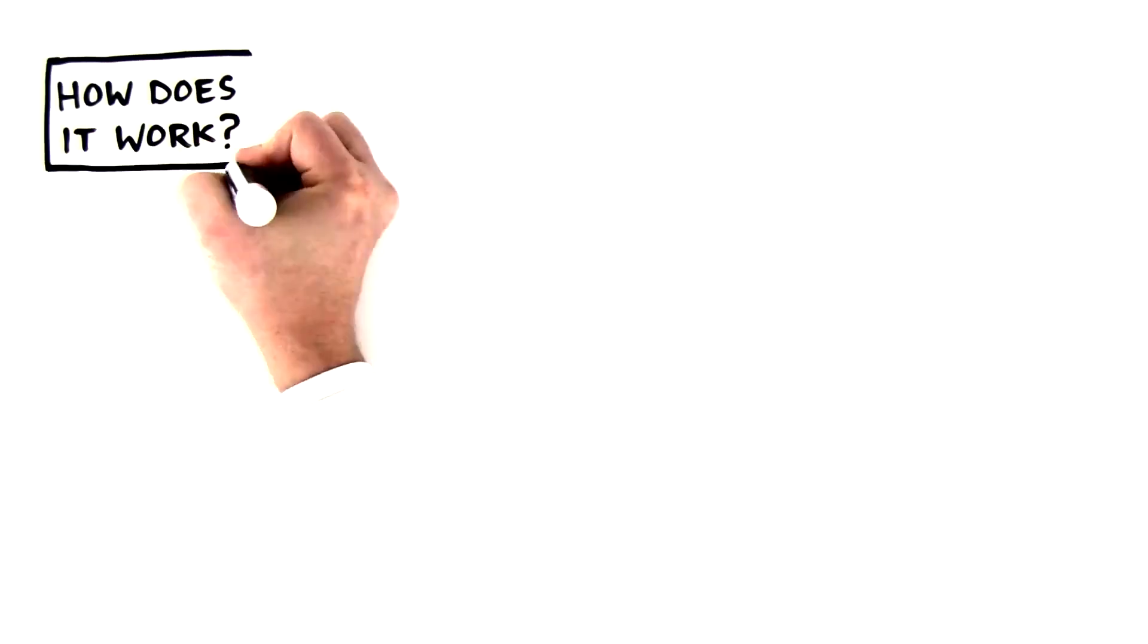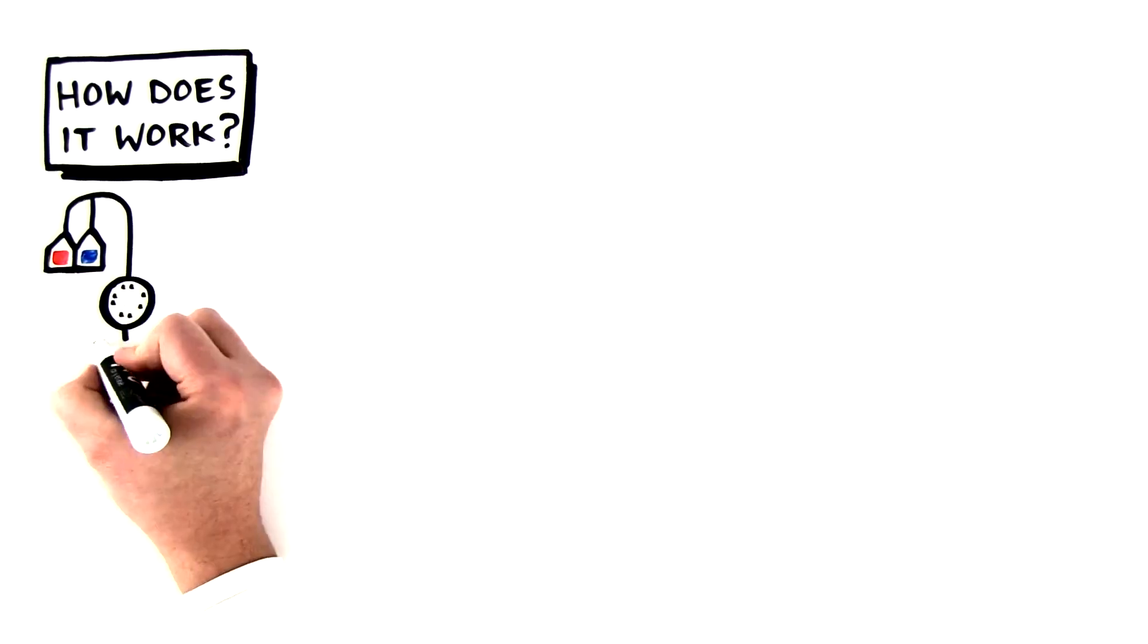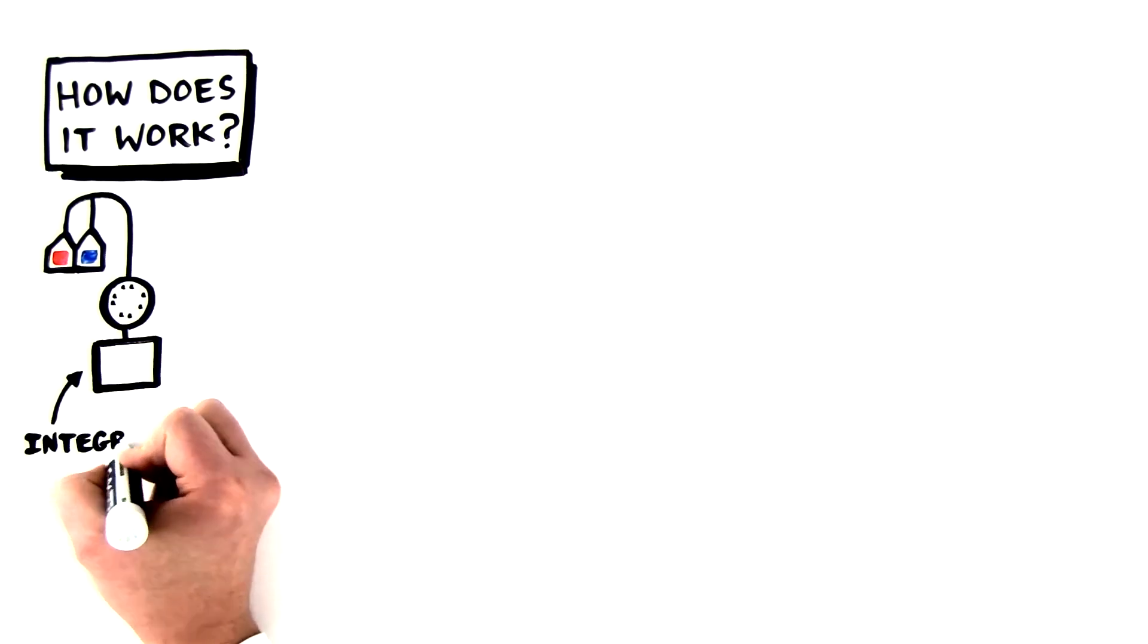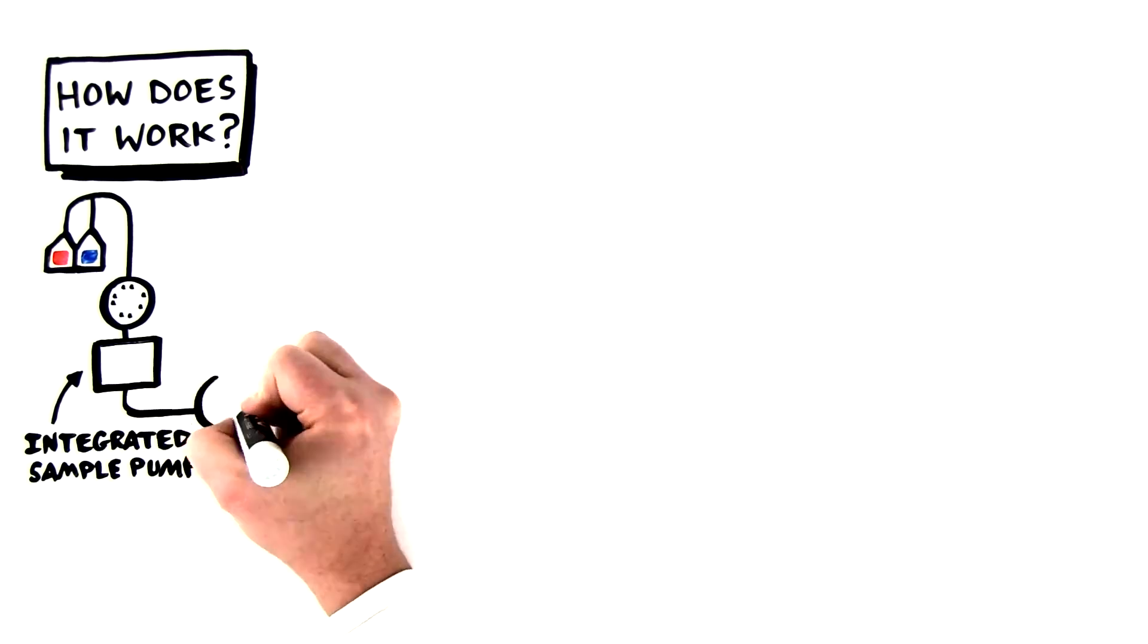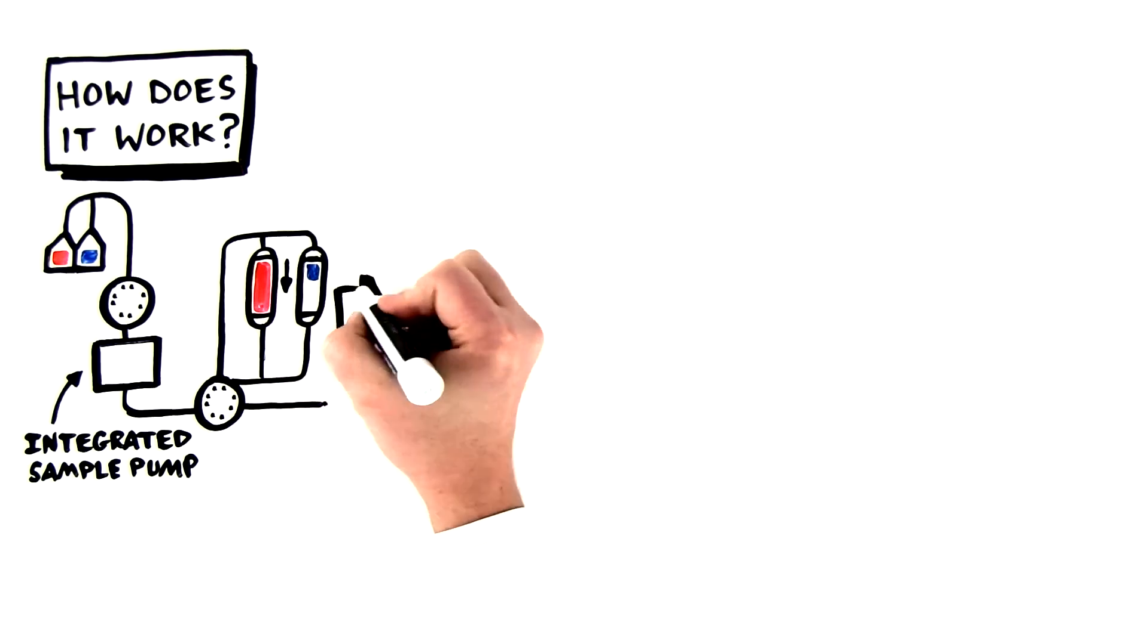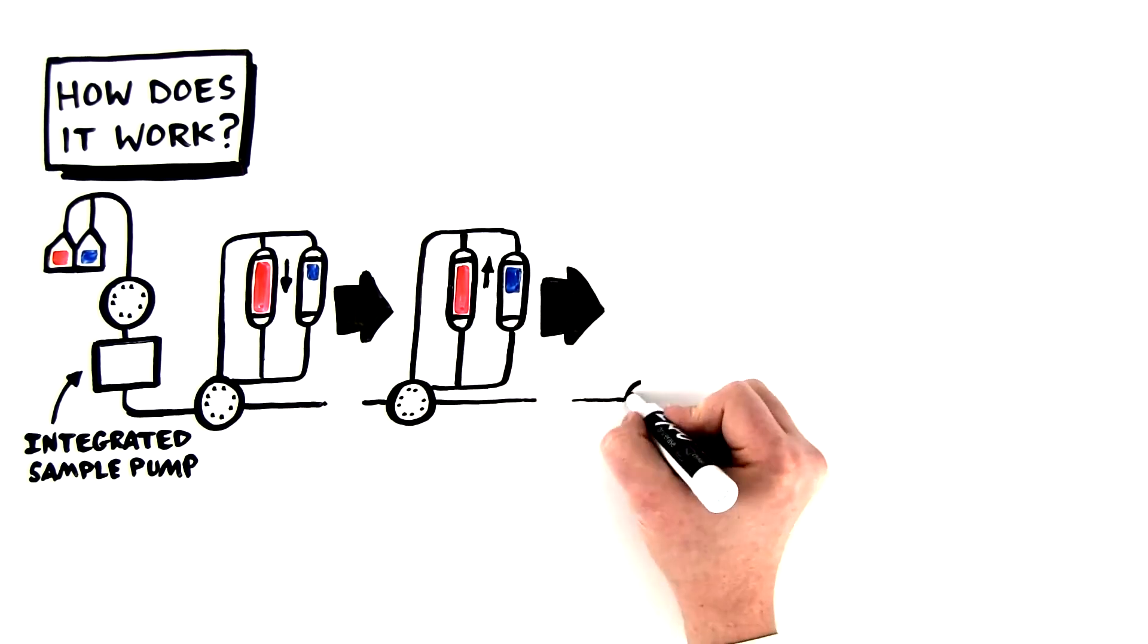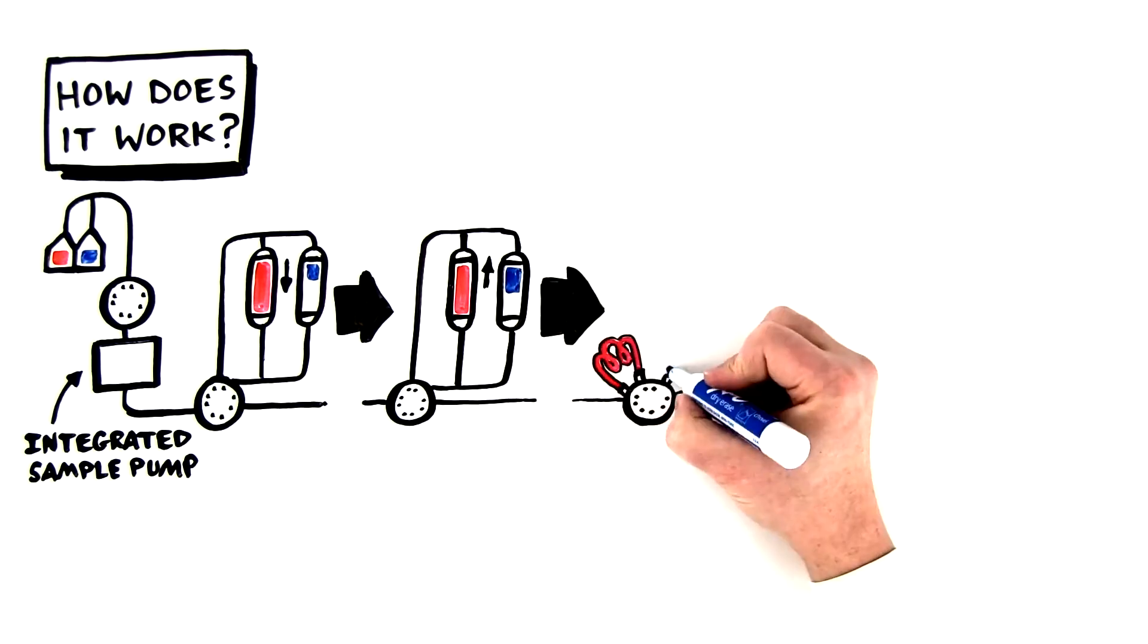But how does it work? Well, in a typical Multi-D workflow, samples are first loaded onto a column using an integrated sample pump. After flow-through and unbound material are washed away, the eluate is shuttled through the detector. Then, samples are taken from key points containing the protein of interest and sent to a loop for storage.